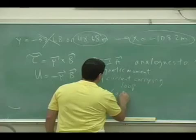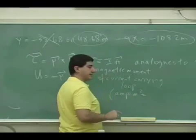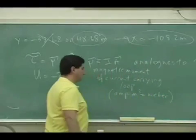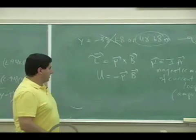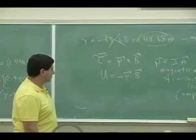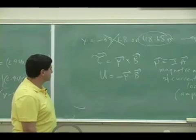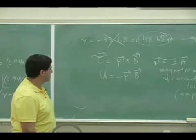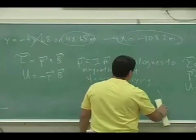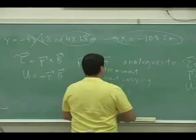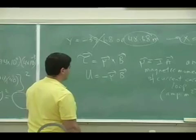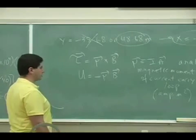Its units are amps times meters squared. That is not the Weber — sorry. The Weber is the unit of magnetic flux. This quantity, the magnetic moment of a current-carrying loop, has no special abbreviation; it's just amp meter squared.